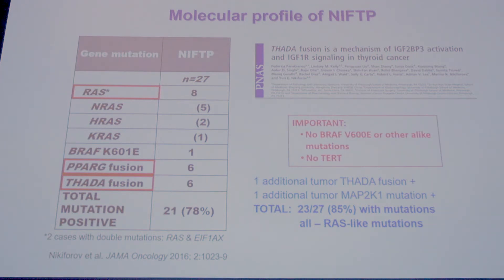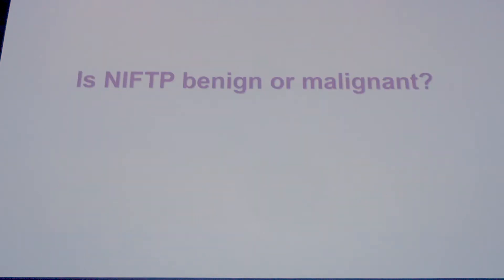Importantly, NIFTP tumors should have no BRAF V600E, no TERT, or other high-risk mutations. If you see this discrepancy, send it back to pathologists to take more slides and sections in order to diagnose these nodules more appropriately.